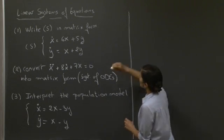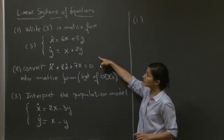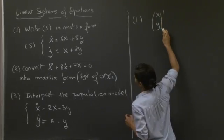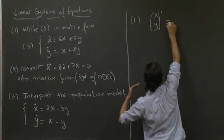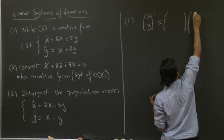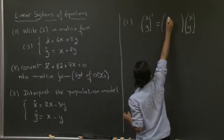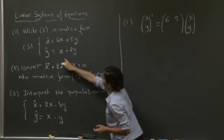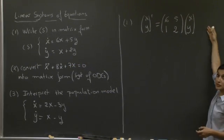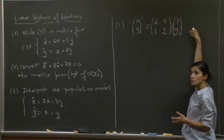Welcome back. For the first question, we're just asked to write this system in matrix form. So we have x, y derivative for the left-hand side. We need to write this in the form of a matrix multiplying x and y. So here we would have 6, 5, 1, 2. And that would be our system of differential equations in matrix form. What we would be solving for would be the vector x, y.